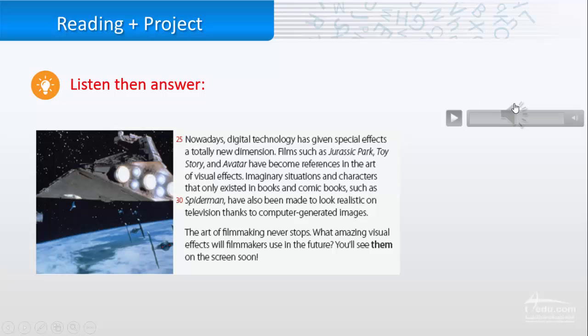And the last part. Nowadays, digital technology has given special effects a totally new dimension. Films such as Jurassic Park, Toy Story, and Avatar have become references in the art of visual effects. Imaginary situations and characters that only existed in books and comic books, such as Spider-Man, have also been made to look realistic on television thanks to computer-generated images. The art of filmmaking never stops. What amazing visual effects will filmmakers use in the future? You'll see them on the screen soon.